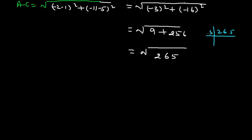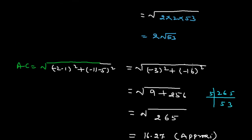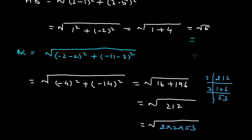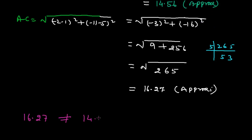We can divide 265 by 5 to get 53. The square root of 265 is approximately 16.27, the square root of 212 is approximately 14.56, and the square root of 5 is approximately 2.23. We observe that 16.27 is not equal to the sum of 14.56 plus 2.23.